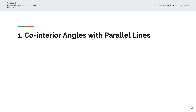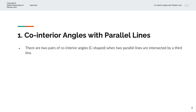So, what are co-interior angles with parallel lines? There are two pairs of co-interior angles when two parallel lines are intersected by a third line, and co-interior angles sum to 180 degrees.